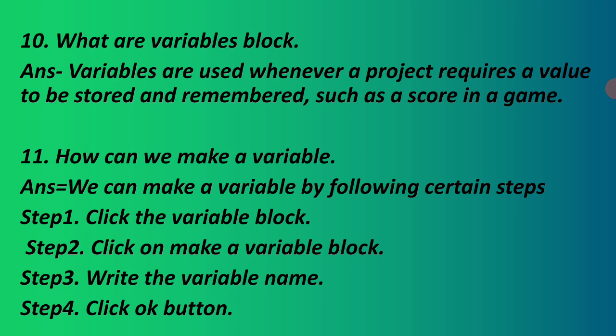Question 11: How can we make a variable? We can make a variable by following certain steps. Step 1: Click the variable block. Step 2: Click on Make a variable block. Step 3: Write the variable name. Step 4: Click OK button.